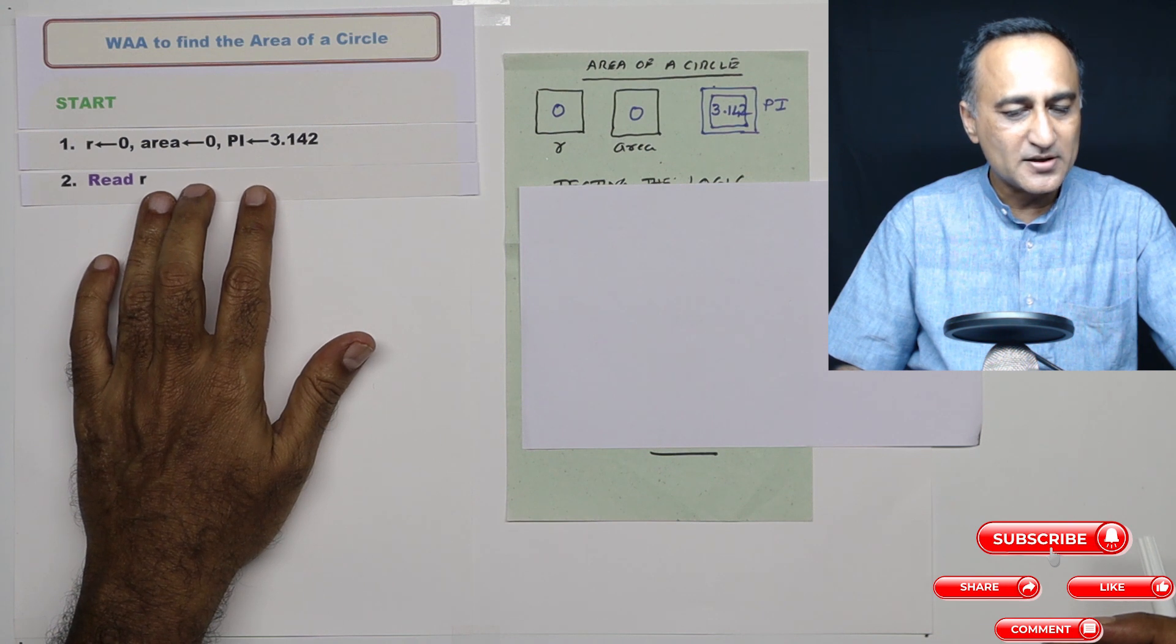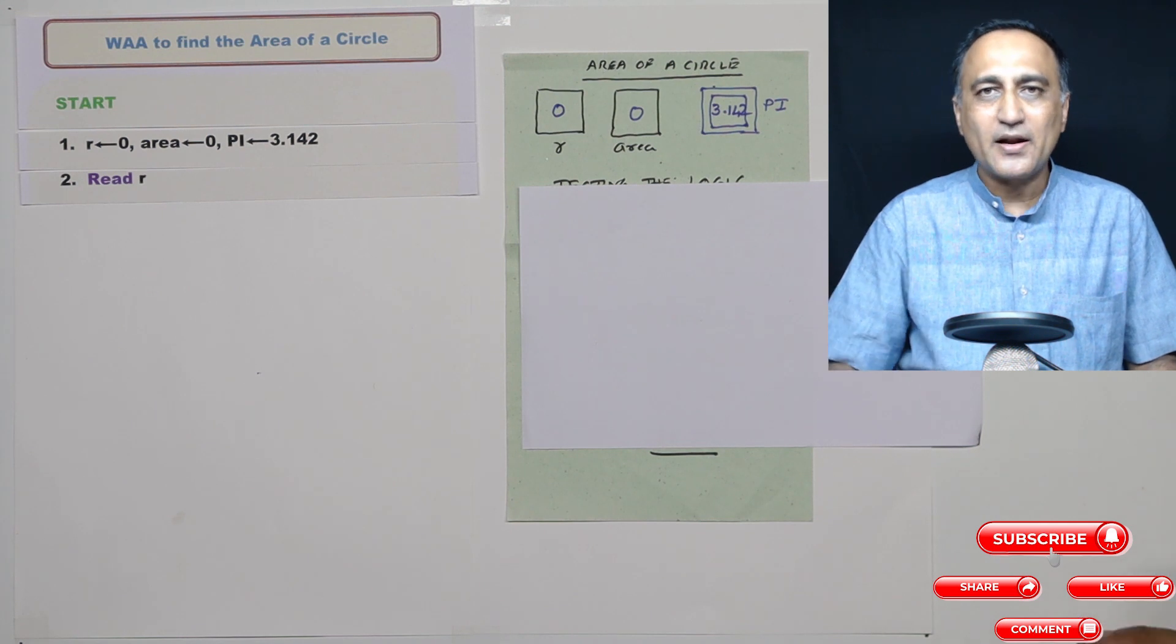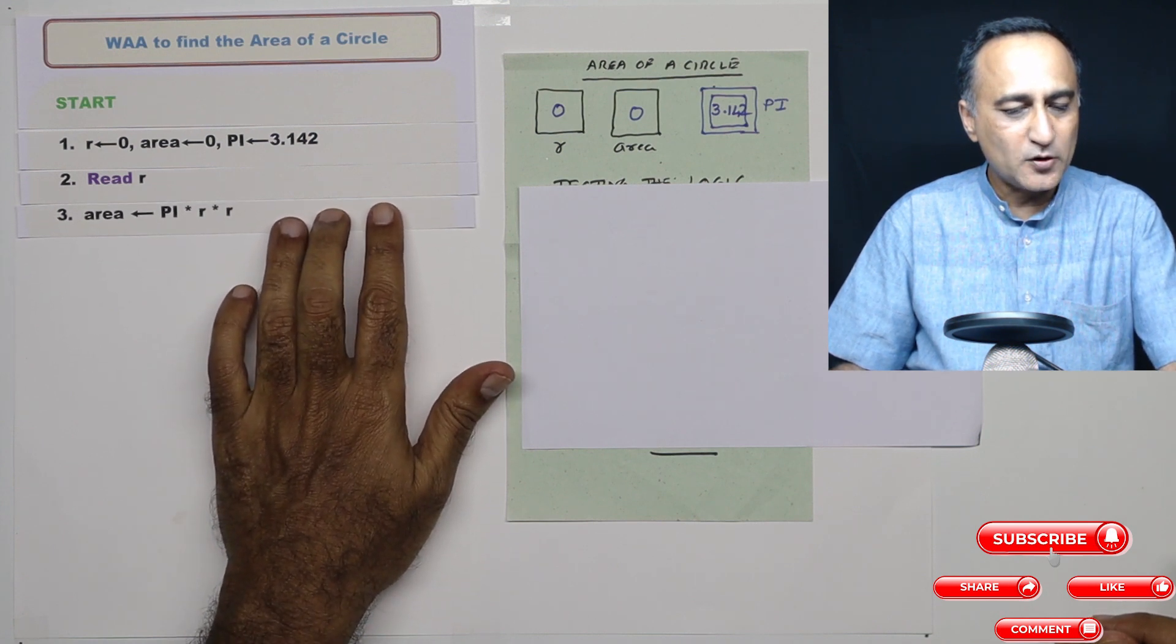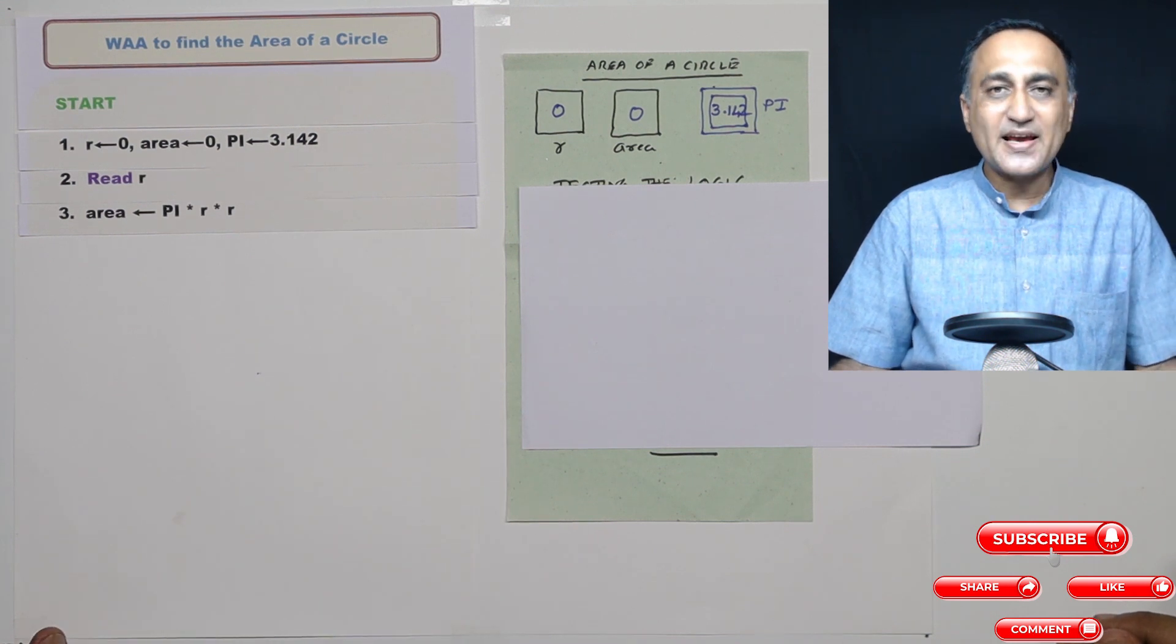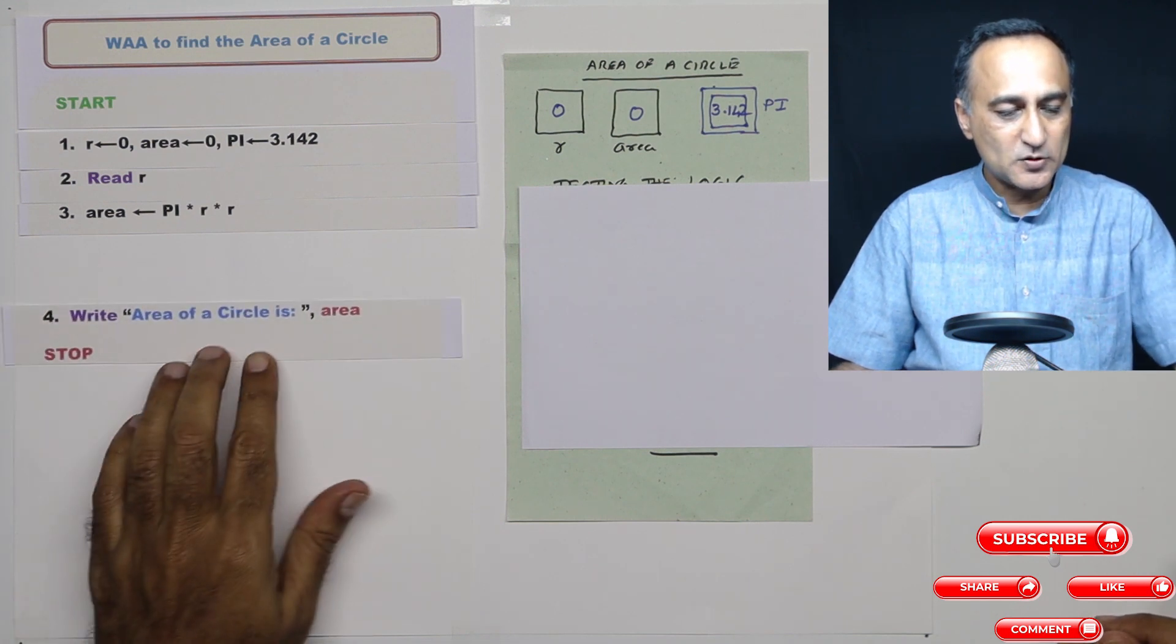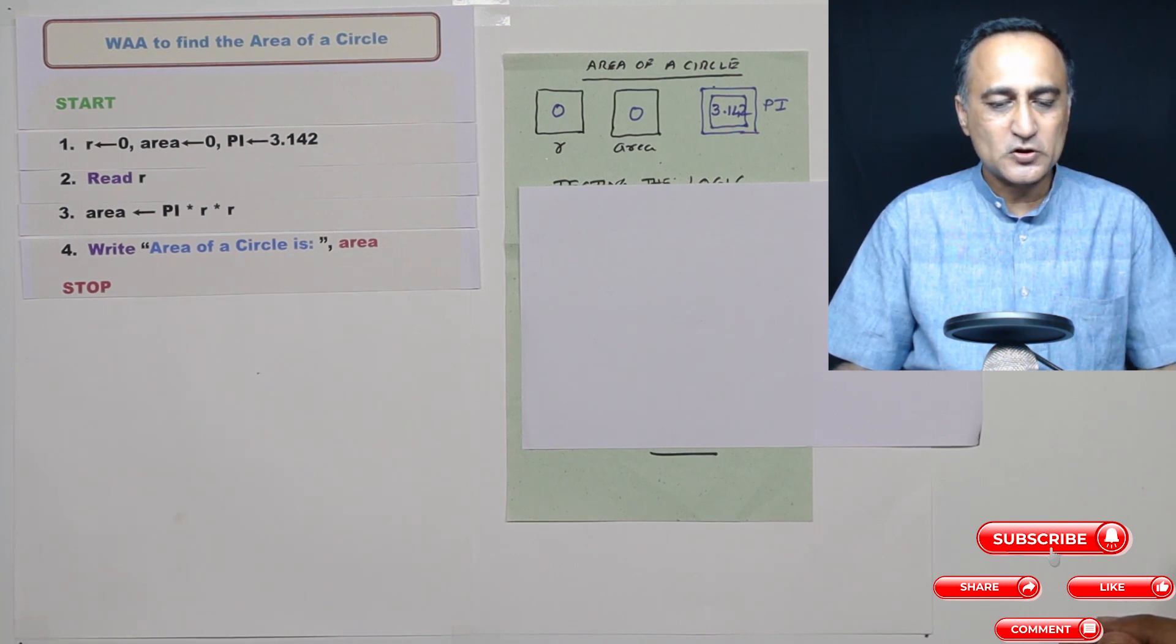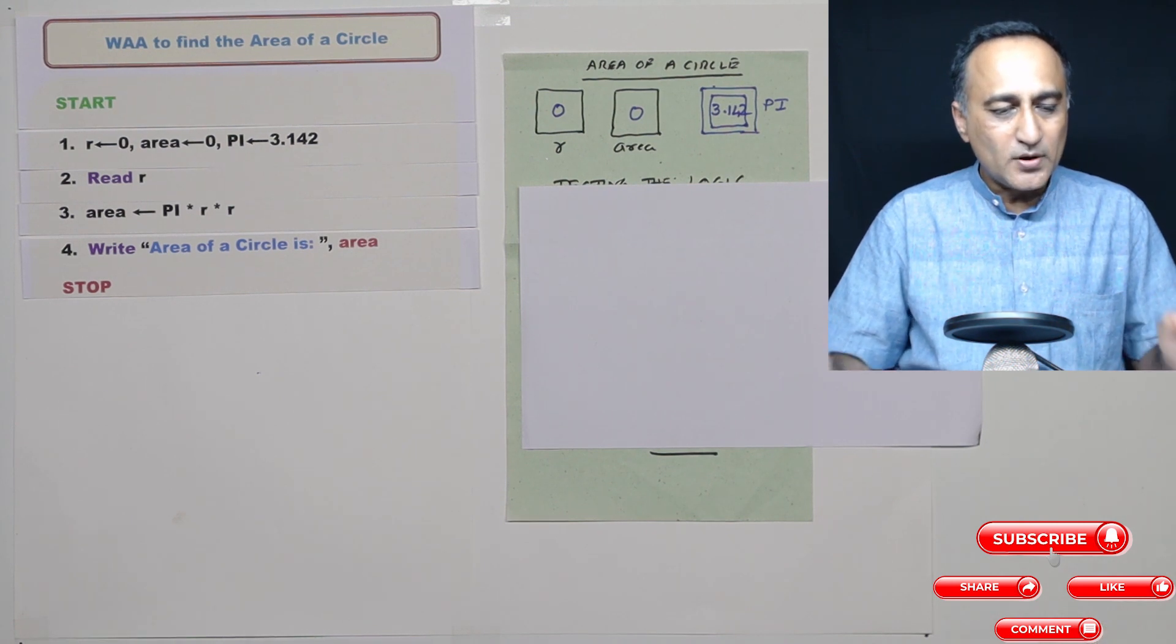So I'm going to read the radius from the keyboard. So once I read the radius, now I'm able to calculate the area. So in step number three, what I'm going to do here is I'm going to calculate area as pi into radius into radius. And finally, once I calculate the area, all that I'm required to do is I'm required to print the area. So what I'm going to do here is I'm going to say write 'Area of a Circle is' in double quotes area, and then I'm going to stop.